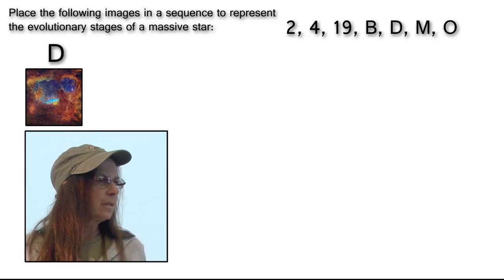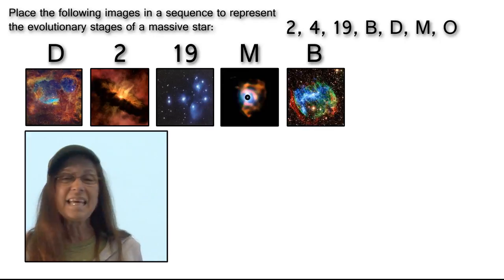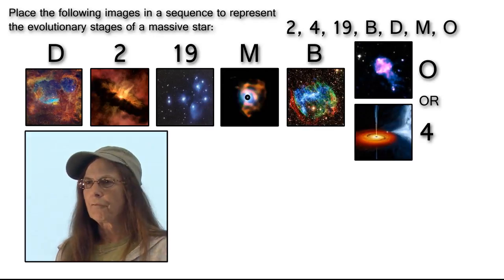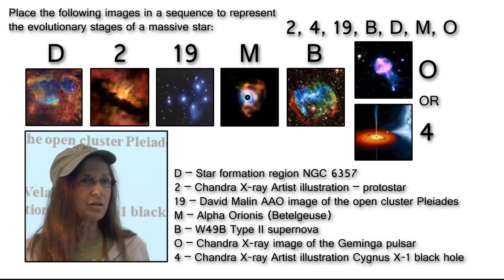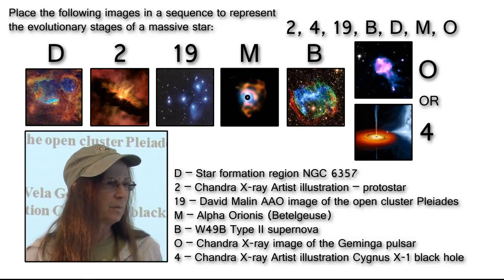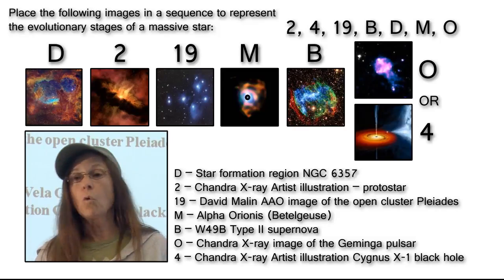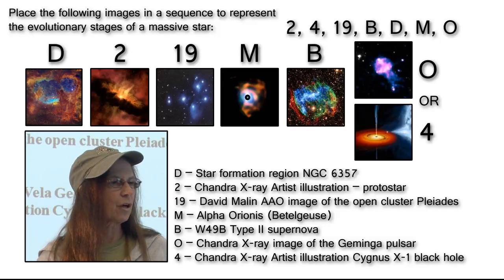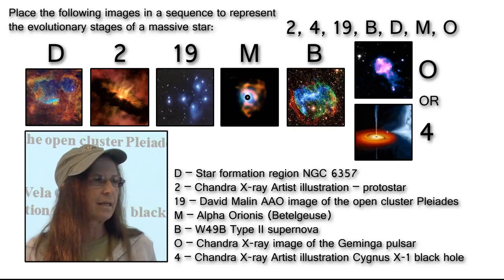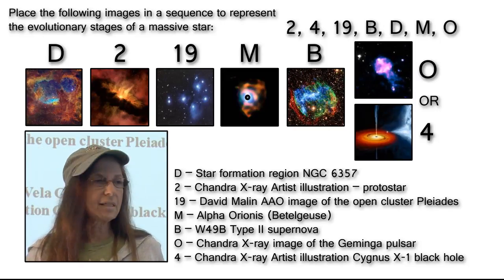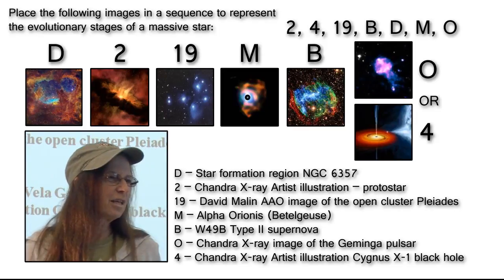We start with D, number 2, number 19, M, B, and O or 4. We've added D, which is a star formation region for 2018 that students need to know about. We have M, which is Alpha Ori — or Betelgeuse by common name — a massive red supergiant. Then we have W49B, which is a type 2 supernova remnant, and O or 4, being a Chandra image of Jumanga.